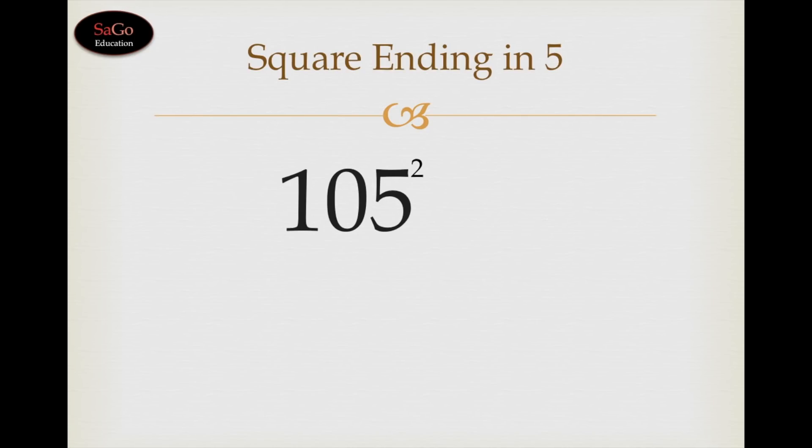Let's take one more sum: 105 square. What comes after 10? 11. So multiply 10 by 11 and we will get 110. Now the square of 5 is 25. Write down 25. Our answer is 11025.